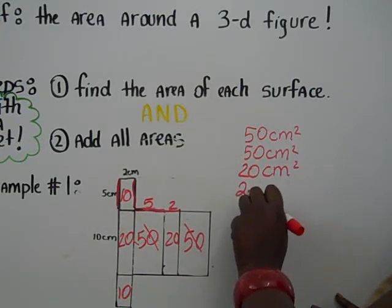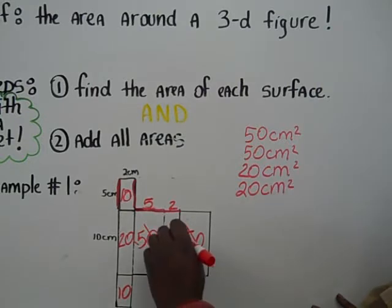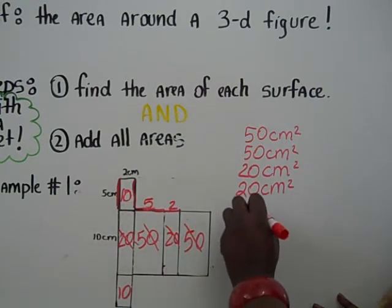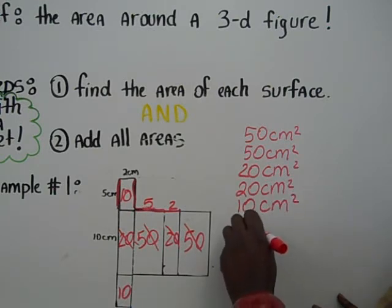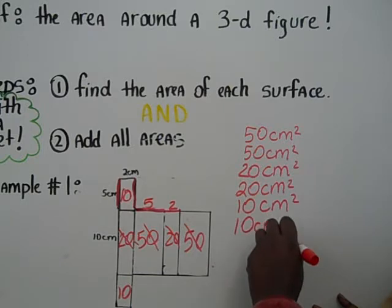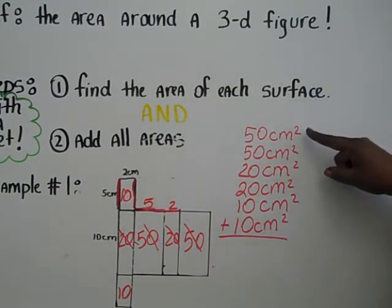And the side opposite of that would be the other 20 centimeters squared. Leaving me with my two 10s. 10 centimeters squared plus the last 10 centimeters squared. So if we add all those areas up, all six faces,